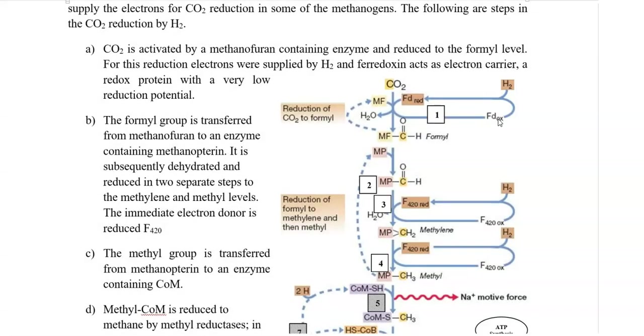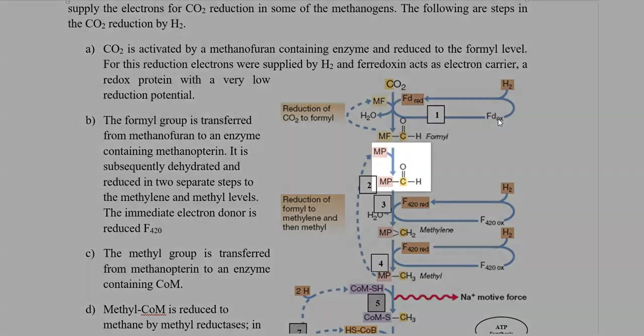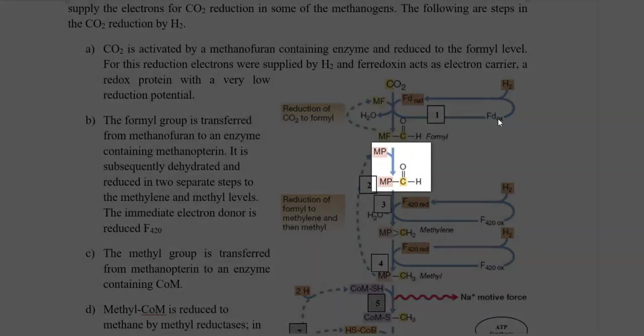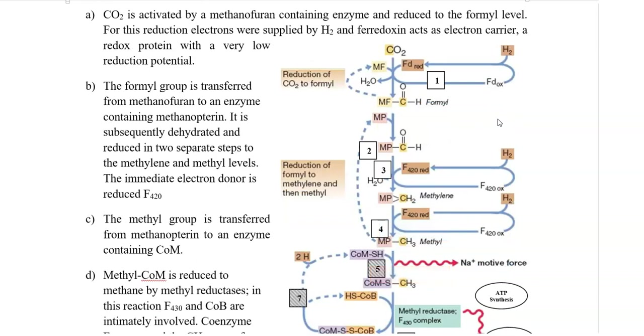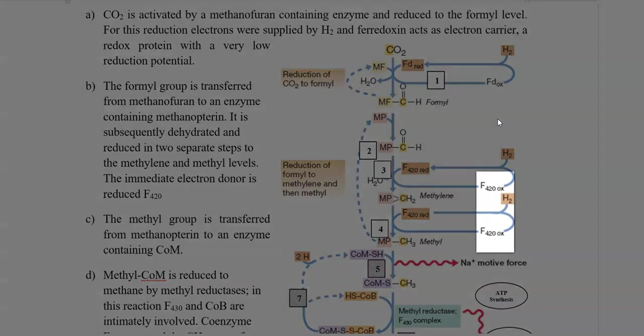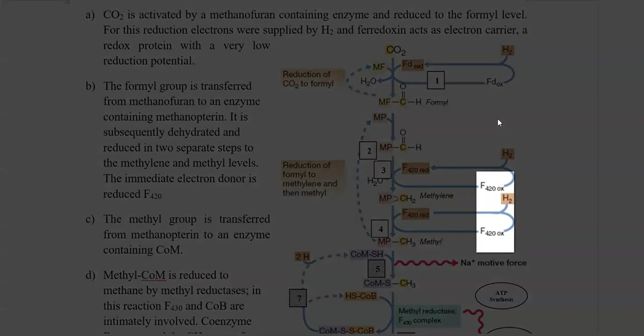In the next step, the formyl group is transferred from the methanofuran-containing coenzyme to methanopterin-containing coenzyme. In this step, it is subsequently dehydrated and reduced in two separate steps to form methylene and methyl levels. For these steps, the immediate electron donor is mainly the reduced F420-containing coenzyme.